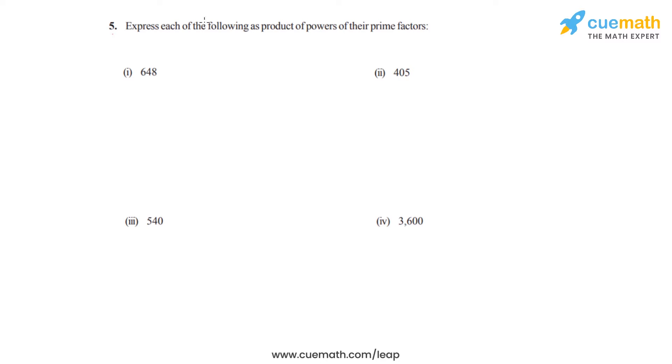Question number 5 of this exercise says to express each of the following as a product of powers of their prime factors. So we will have to prime factorize each of the given numbers. We will start with 648, so let's divide it by all the prime numbers by which it is divisible.